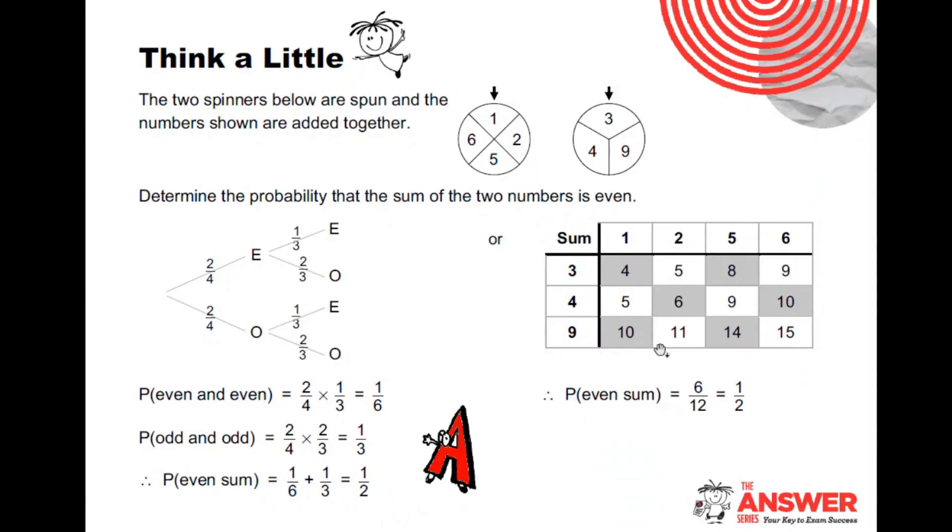Remember on a tree diagram, we multiply going along the branches, so two over four times one over three, two over four times two over three, and then we add the two branches that we could use, and the probability was a half. There is an alternative. I could take the one spinner one, two, five, six, the other spinner three, four, nine, add all the sums. I get a total of 12 options. How many of them have an even sum? I've highlighted those. There's six of them. So either way, you can do it.